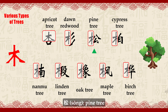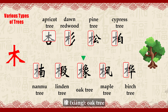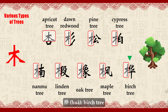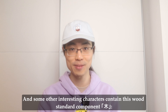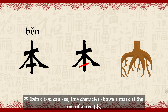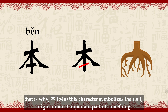This page shows various types of trees: Shān (杉) Dung Redwood, Sōng (松) Pine Tree, Bǎi (柏) Cypress Tree, Nán (楠) Nan Mew Tree, Duàn (椴) Linden Tree, Xiàng (橡) Oak Tree, Fēng (枫) Maple Tree, Huà (桦) Birch Tree. Some other interesting characters also contain this wood standard component: Běn (本) — you can see this character shows a mark at the root of a tree, symbolizing the root, the origin, or the most important part of something.